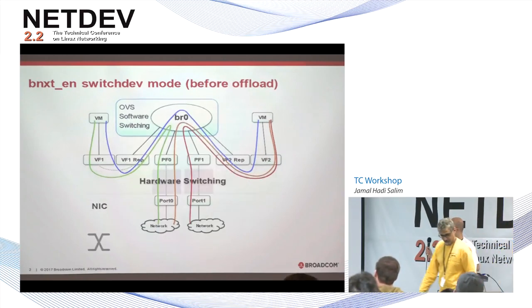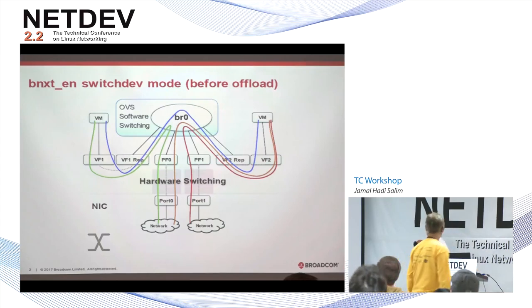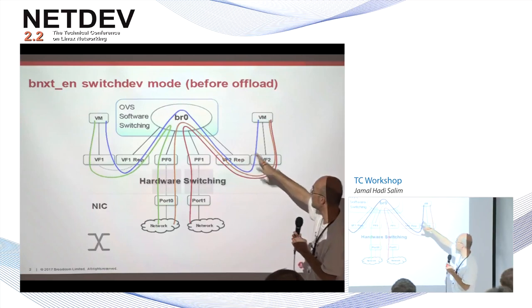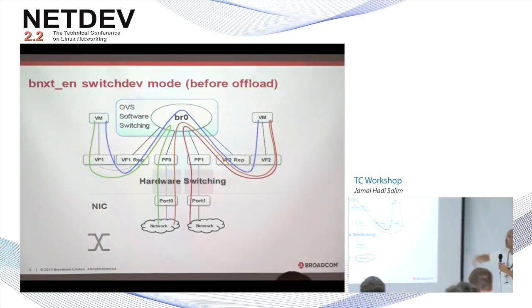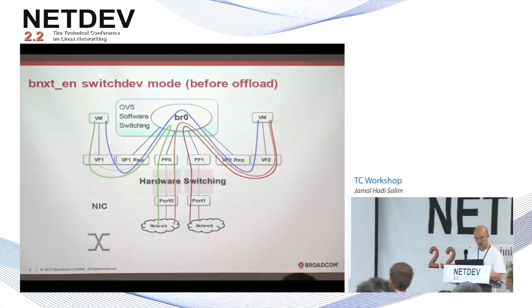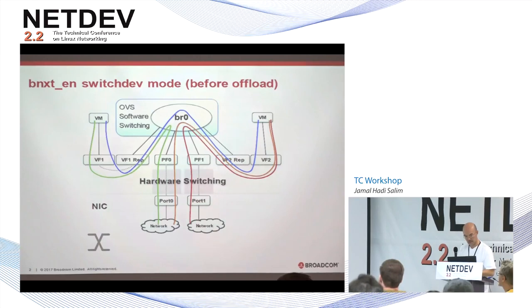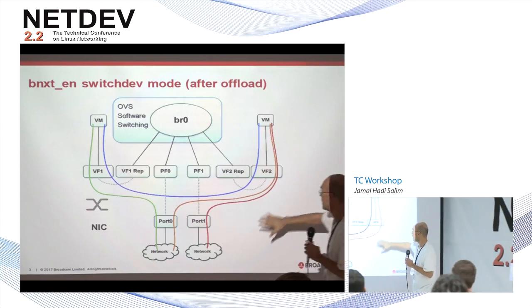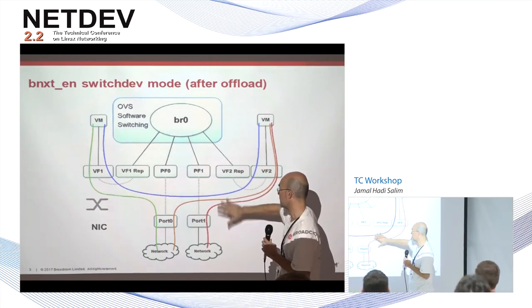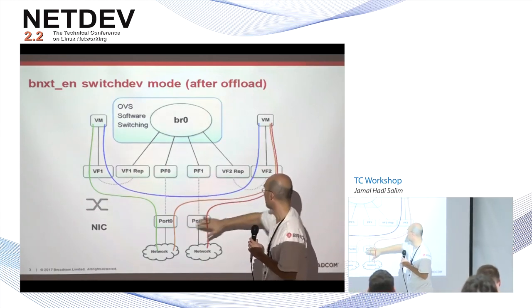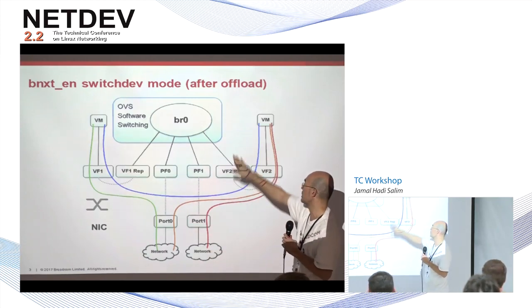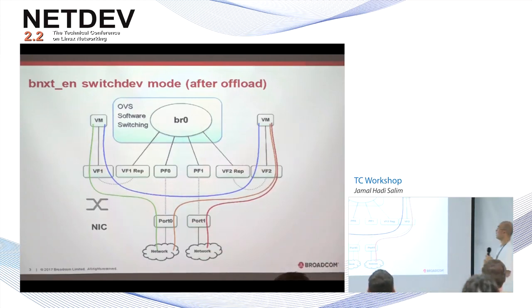If we insert all the TC flower rules for all these different colored paths in the proper way, then all flows will now flow directly. This is inside the NIC — the internal switch inside a two-port NIC. The flows will flow directly without going through the software switch.